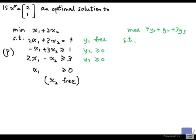The constraints are what we can get from the coefficients of each variable in the primal problem. So for the coefficient of x1, we have 2y1 minus y2 plus 2y3. And that's going to be less than or equal to 1 because x1 is a non-negative variable.